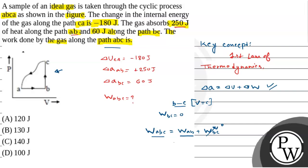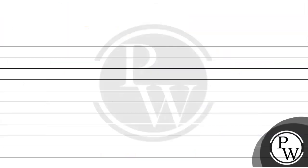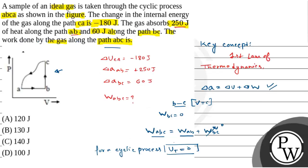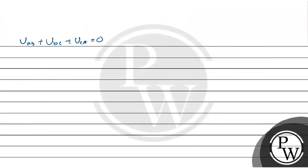Now, this path is a cyclic path. So, for a cyclic process, the total internal energy is zero. That means U_AB plus the internal energy at BC plus U_CA equals 0. Now, the internal energy at CA is given, but we need to find the rest.